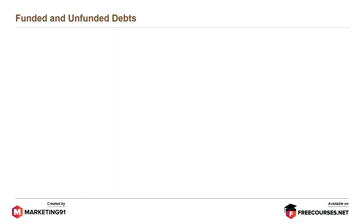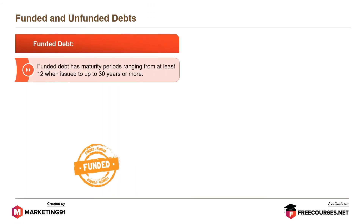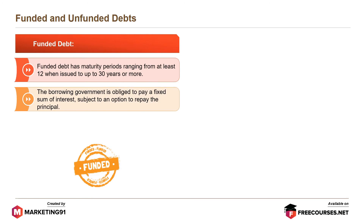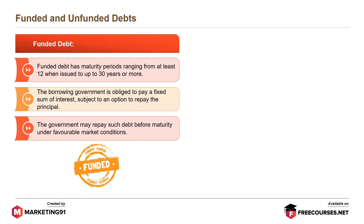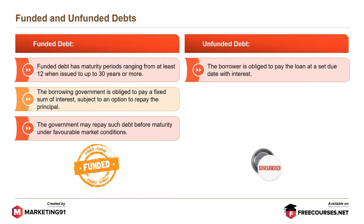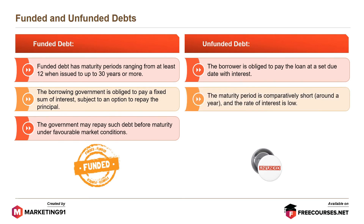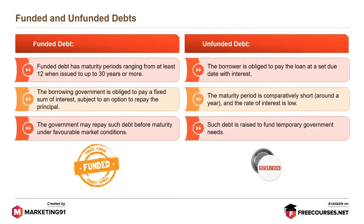Funded debt has maturity periods ranging from at least 12 years when issued to up to 30 years or more. The borrowing government is obliged to pay a fixed sum of interest, subject to an option to repay the principal. The government may repay such debt before maturity under favourable market conditions. In unfunded debt, the borrower is obliged to pay the loan at a set due date with interest. The maturity period is comparatively short — around a year — and the rate of interest is low. Such debt is raised to fund temporary government needs.